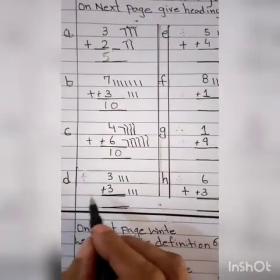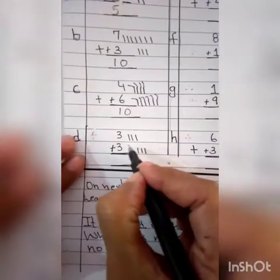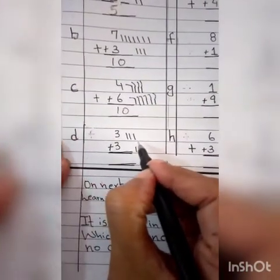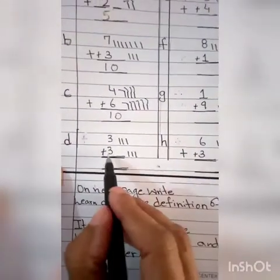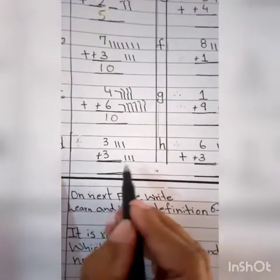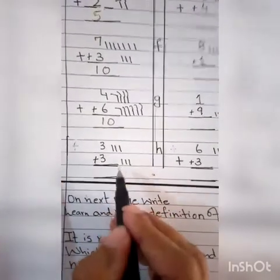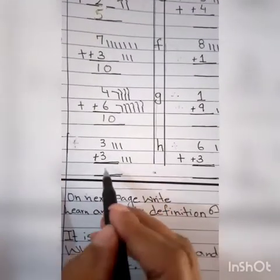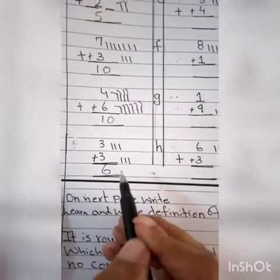D — 3. Draw 1, 2, 3. Number 3 ke saamne utni hi sticks lagayenge. And again 3. Ab in sabko count kijiye: 1, 2, 3, 4, 5, 6. Theek na — ye toh aapke 4 sums yahan pe complete ho gaye.